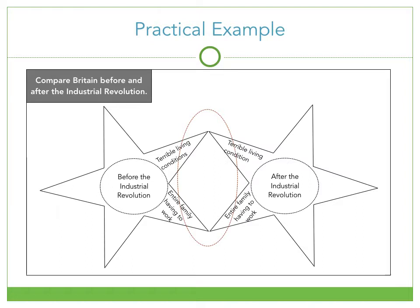One similarity could be terrible living conditions. Before the Industrial Revolution, people were living in really poor, terrible living conditions. Even though the Industrial Revolution brought wealth and prosperity to some Britons, many people were still living in packed housing with poor sanitation. Another characteristic could be that the entire family had to work — before the Industrial Revolution, boys and girls were all encouraged to help out on the farm.